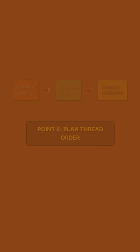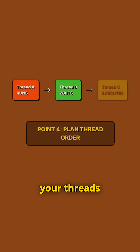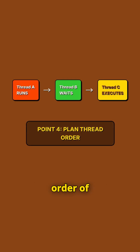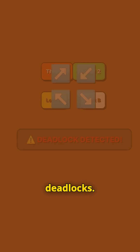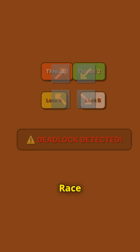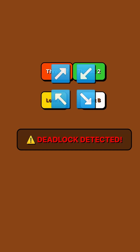Point 4: Visualize how your threads will interact. What's the order of execution? Plan to avoid deadlocks, race conditions, and starvation before they happen.